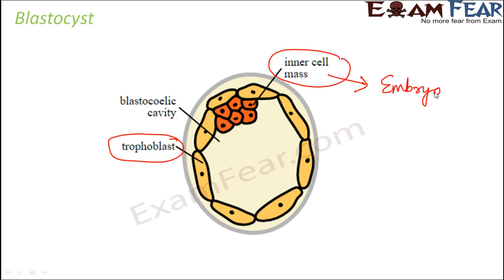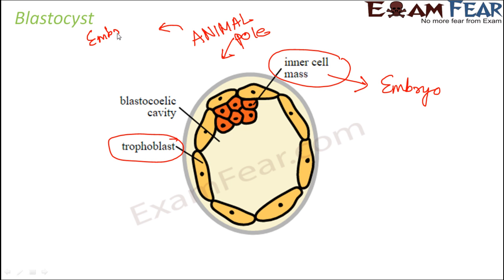That is the purpose of the trophoblast and inner cell mass. The side of the blastocyst where the inner cell mass is attached is called the animal pole. The inner cell mass is attached only at one end, and this end is called the animal pole, also known as the embryonic pole because the inner cell mass gives rise to the embryo.